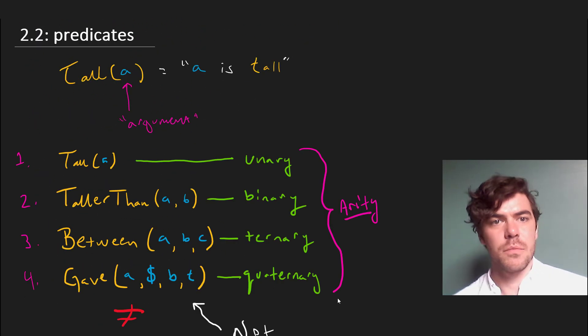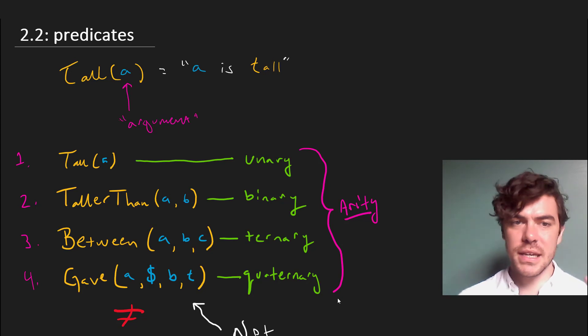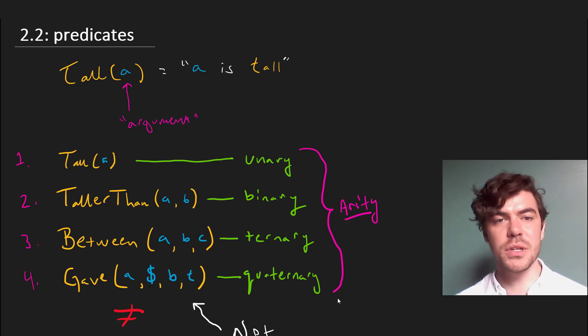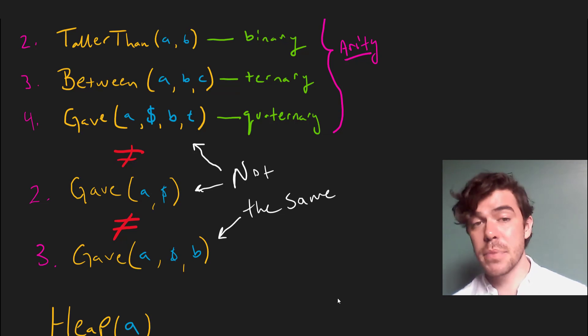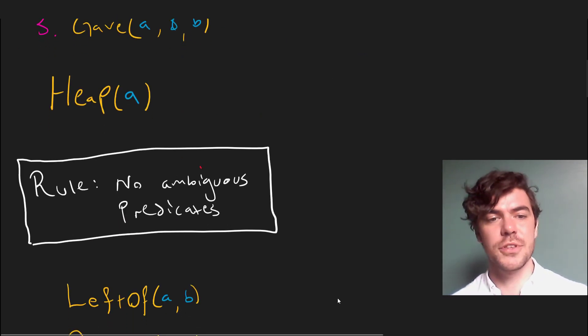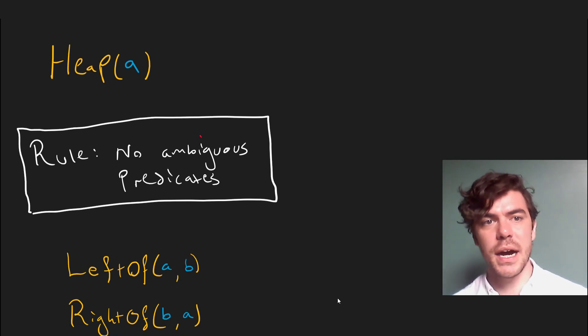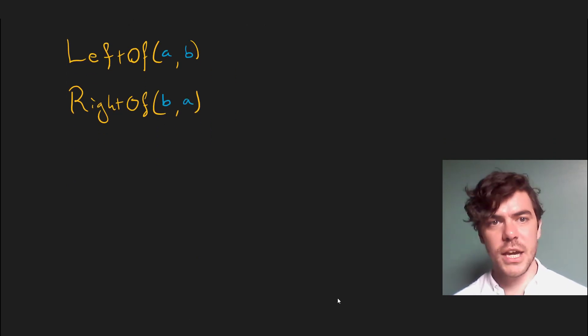So in sum, then, predicates have arity, which is the number of arguments they take. Argument, again, being a technical term and not the kind of argument we typically mean when we talk about arguments in logic and so forth. Second, predicates with different arity like this cannot be the same, even if they seem to correspond to the same ambiguous English turn of phrase the way gave did in our example. Third, there are no ambiguous predicates. Heap either applies or doesn't apply to every object. And finally, equivalent things can be expressed using different predicates and different orders of the constants and so forth.